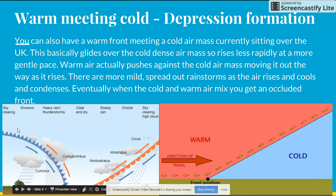On this side you've got cold meeting warm, where you have a cold front. And here, this is what happens when warm meets cold. These are the sort of clouds you get and the kind of conditions.